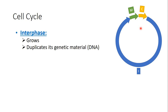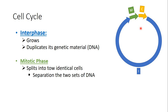First, the interphase: in the interphase the cell grows and then the DNA duplicates, so the genetic material duplicates inside the cell. Then we have the mitotic phase, in which mitosis happens and the genetic material is split into two. And then in cytokinesis, the cytoplasm is separated or divided, and I get two separated cells. So let's now talk about every one of these phases in detail.